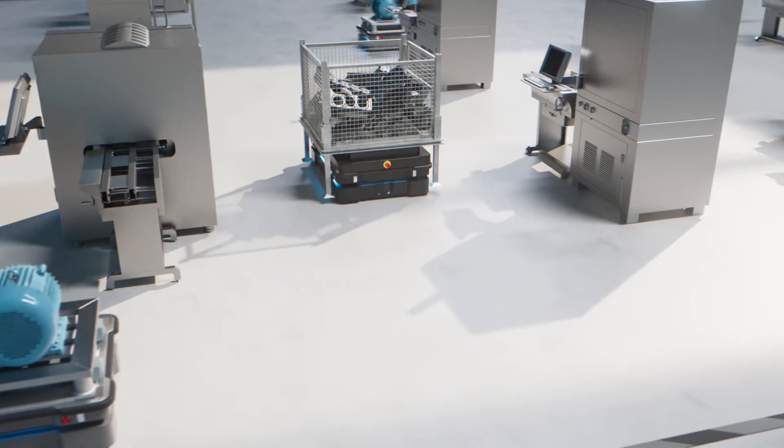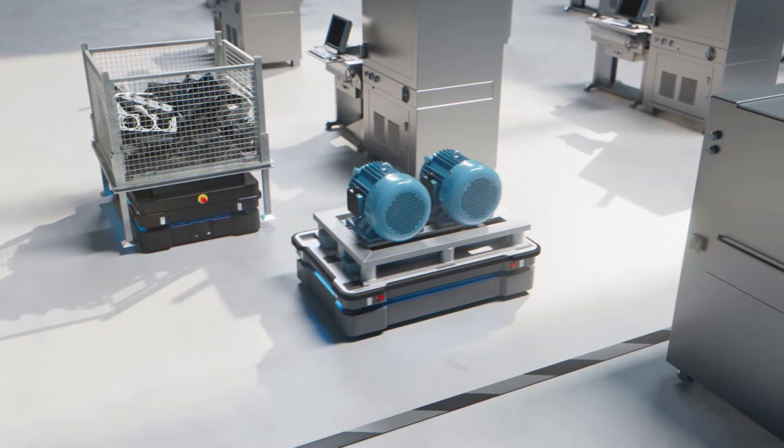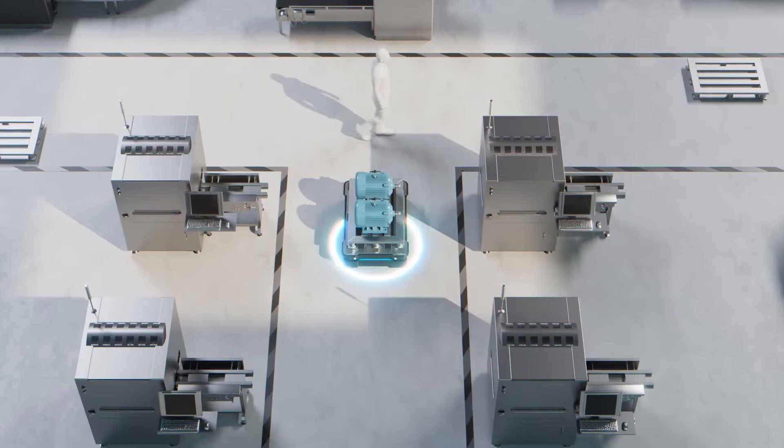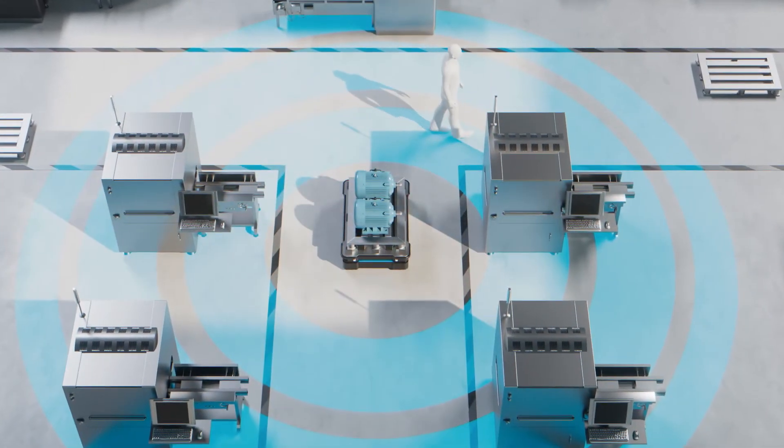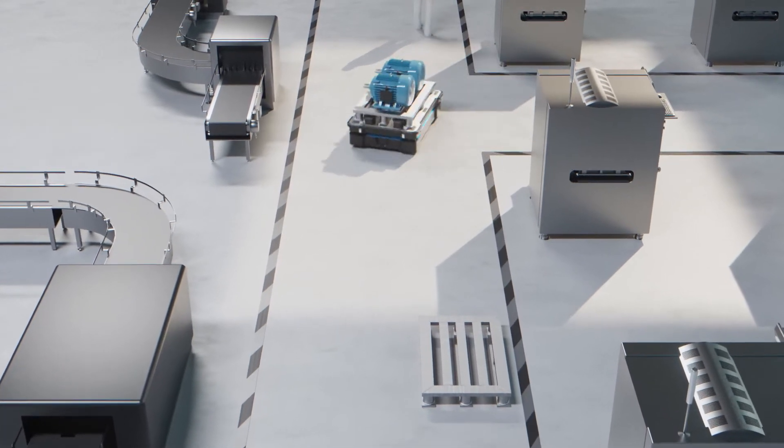As with all the MiR robots, the MiR 600 and MiR 1350 are collaborative. With multiple built-in safety features, including dynamic safe zone monitoring, the MiR 600 and MiR 1350 always maintain a safe distance to employees and obstacles.